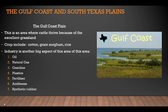The Gulf Coast Plains is an important region of Texas where cattle thrive because of excellent grassland. Crops include cotton, grain, sorghum for cattle feeding, and rice. Numerous industries are present in this area, including oil, natural gas, gasoline, plastics, fertilizer, antifreeze, and synthetic rubber. Oil and natural gas are refined here — crude oil is processed into gasoline and shipped out to wherever it is needed.